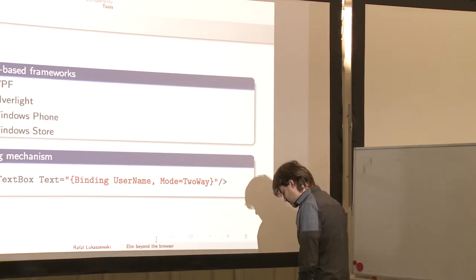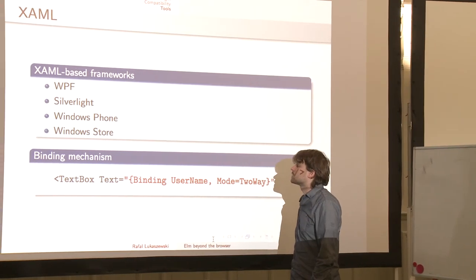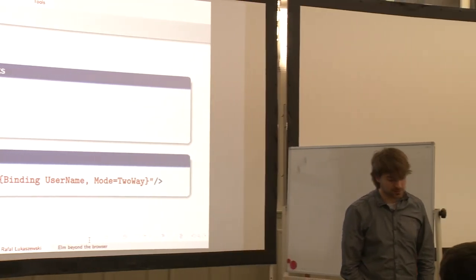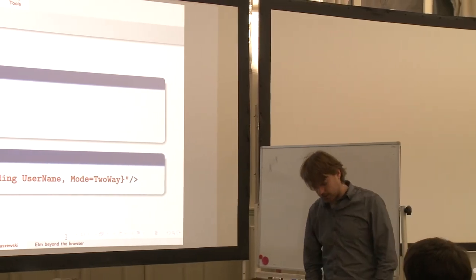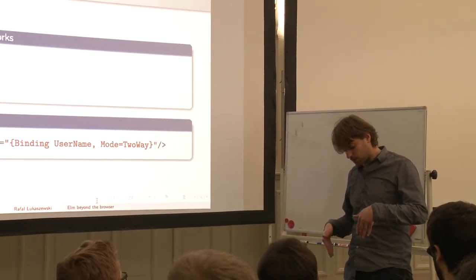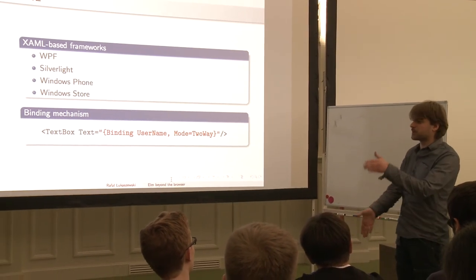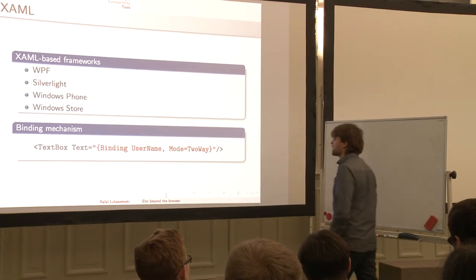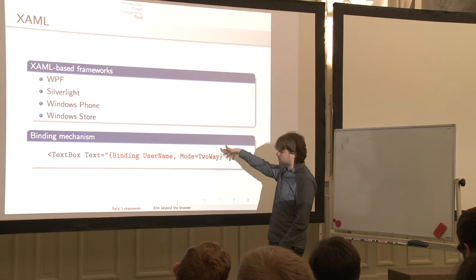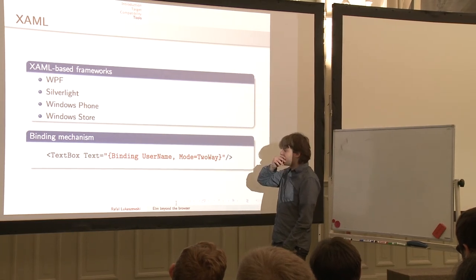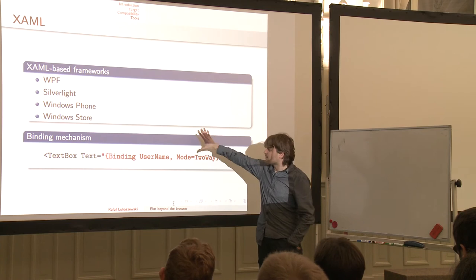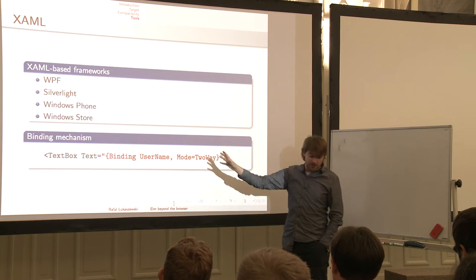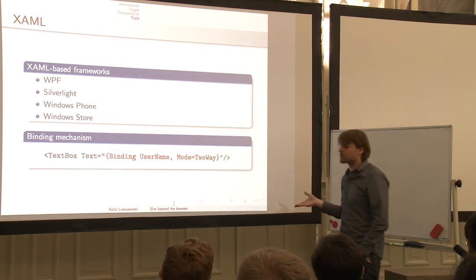The model receives information from the view, the view receives information from the model, and it happens seamlessly without any additional work from the developer. I really like this system. When we find a way to decompose our programs so we can pick the UI layer and the model layer, we can very easily translate it to something like that. The UI can be generated from code — it doesn't have to be XML. That's very important.